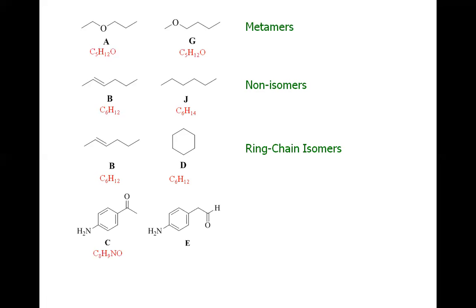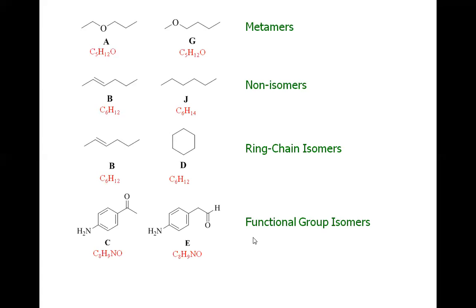For the pair C and E: they are isomers with the matching molecular formula C8H9NO. In one compound we have a ketone functional group, and in the other we have an aldehyde functional group. Since different functional groups are present for the same molecular formula, they are called functional group isomers.